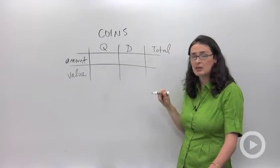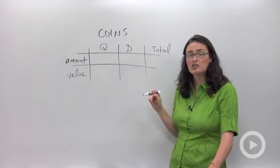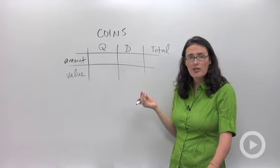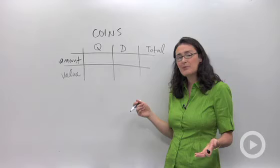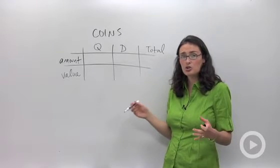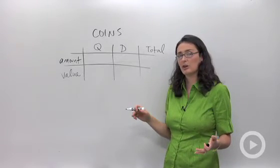By the way, in algebra class, we usually only deal with two variables at a time. So although we might, in the real world, have quarters, dimes, and nickels, in these problems you're only going to be dealing with two of those. You're not going to have all three to work with.